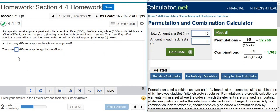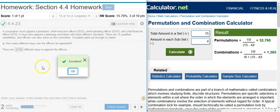And so we're going to select the permutations. So there are, in this case, 32,760 different ways to appoint the officers. Excellent!